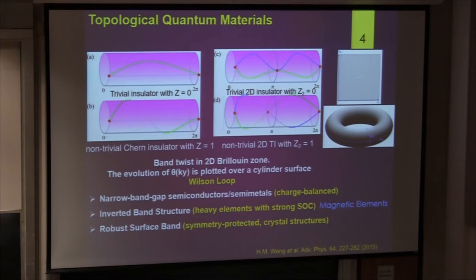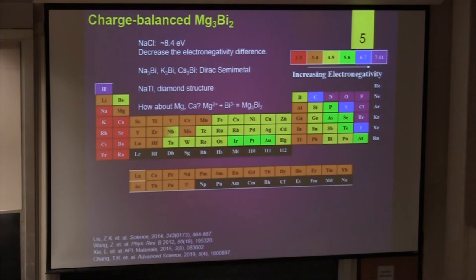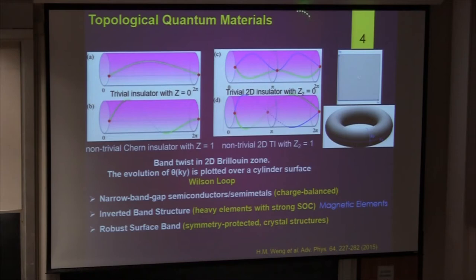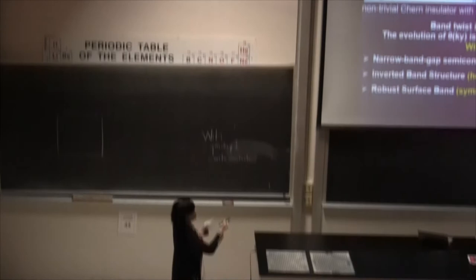Is there a quantitative way to tell if a material is topological or not? The most common way people look at topological materials is to calculate the Z2 invariant. What does this mean? Basically, we are calculating the surface band structure. There are two different surface bands. What it looks like is this: we have a two-dimensional surface Brillouin zone — one axis is KX and one is KY. We draw a line. We have two types: one is called trivial, one is called non-trivial.